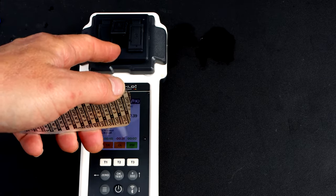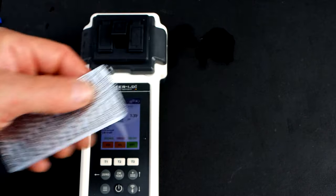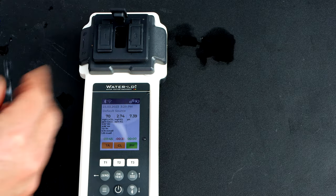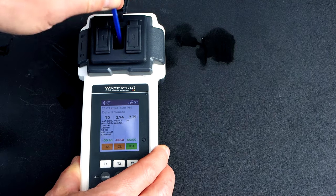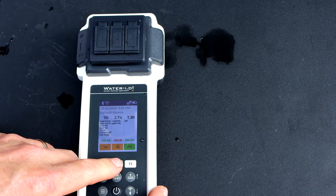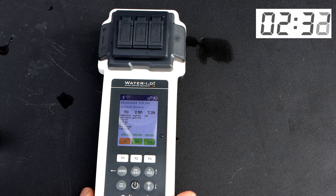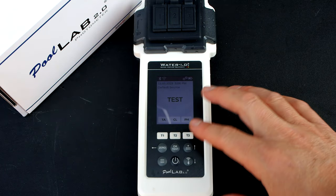You can see that the total chlorine is coming in at 2.9. You can also do a single parameter. You go ahead and hold down test 2, now you can scroll between the different tests. I'm going to do cyanuric acid.